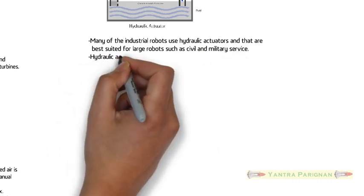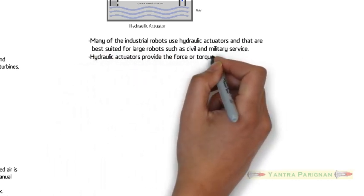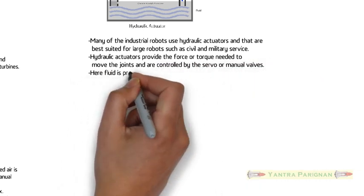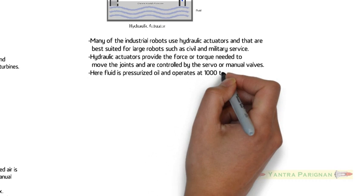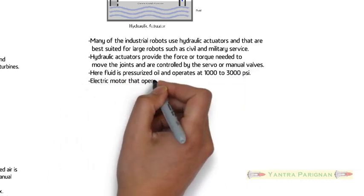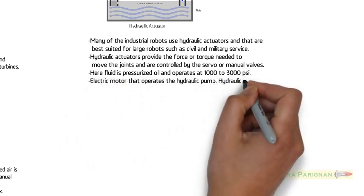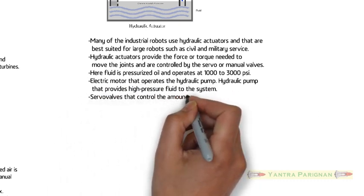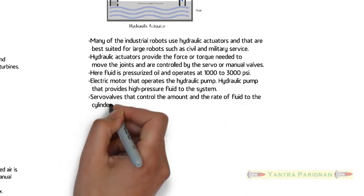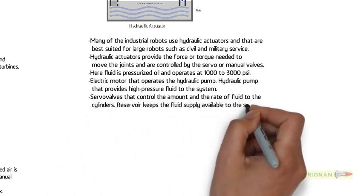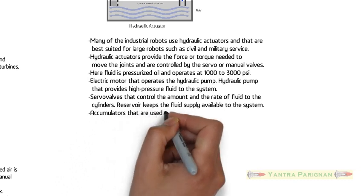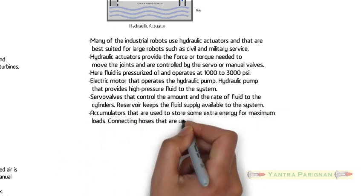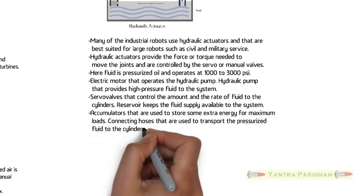Hydraulic actuators provide the force or torque needed to move the joints and are controlled by servo or manual valves. Here fluid is pressurized oil and operates at 1,000 to 3,000 pound force per square inch. Electric motor operates the hydraulic pump. Hydraulic pump provides high pressure fluid to the system. Servo valves control the amount and the rate of fluid to the cylinders. Reservoir keeps the fluid supply available to the system. Accumulators are used to store some extra energy for maximum loads.